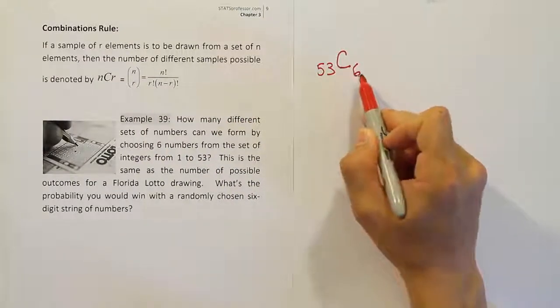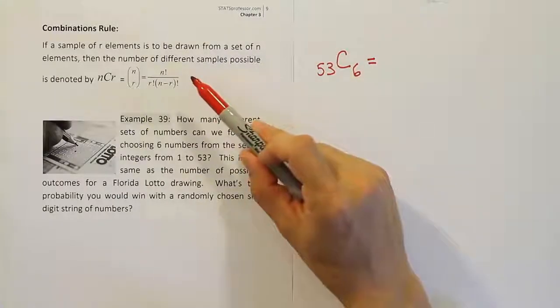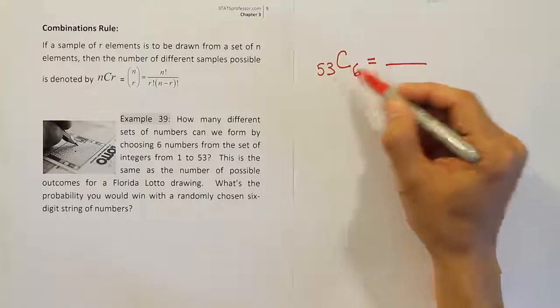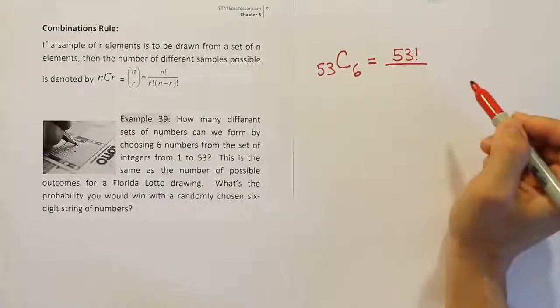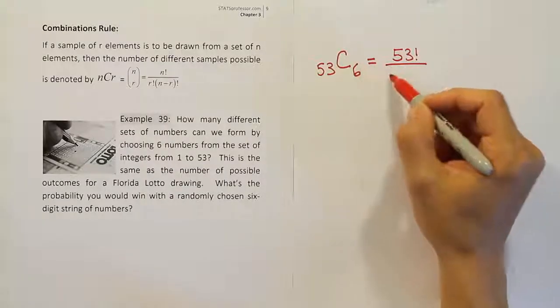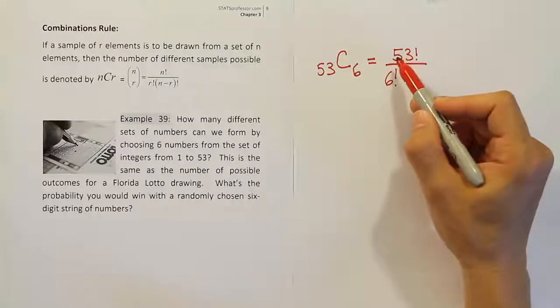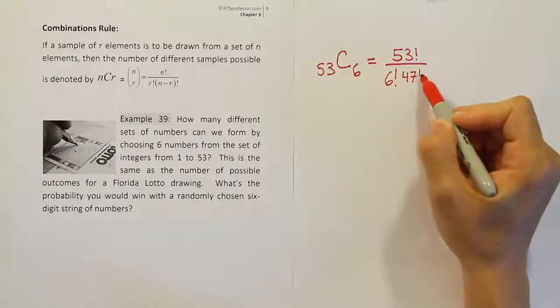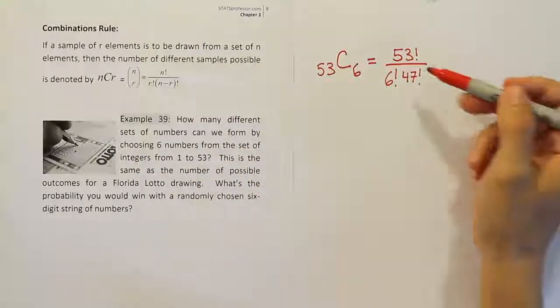So 53 things, choose 6 of them. And then from there, once that's set up, we just follow the structure of the formula. Now the formula is pretty easy. We take the big number here, the first number, and we put it on top. We follow it with a factorial symbol. We put the next number on the bottom with a factorial symbol. And then we put the difference between the two numbers. So what's the difference between 53 and 6? Well, the answer is 47, and we put a factorial behind that. And that's essentially what this is doing.